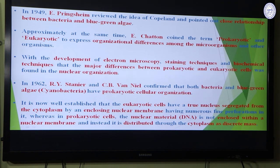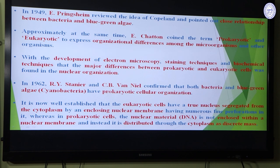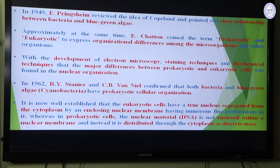By studying various types of microorganisms using electron microscopy and biochemical techniques, scientists found interesting information regarding cell types and molecular organization. In 1962, R.Y. Stanier and C.B. van Niel confirmed that both bacteria and blue-green algae — then renamed cyanobacteria — have prokaryotic cellular organization. It is now well established that eukaryotic cells have a true nucleus segregated from the cytoplasm by an enclosing nuclear membrane with fine perforations, whereas in prokaryotic cells, the DNA is distributed throughout the cytoplasm as a discrete mass.